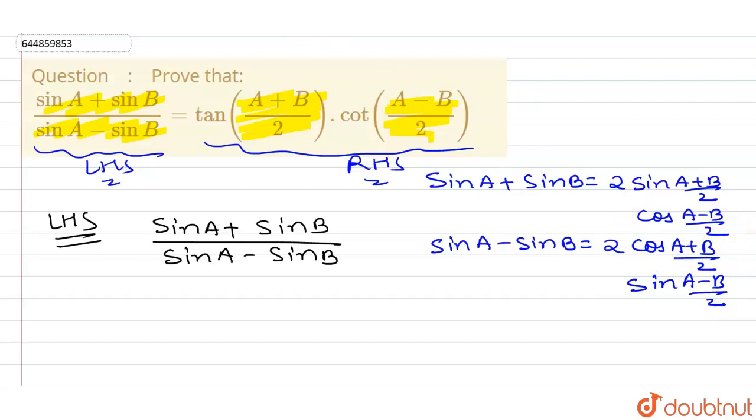I have to substitute these all the values in this given value. So sine A plus sine B is equals to this, so I can write here 2 sine A plus B by 2 cos A minus B by 2 upon sine A minus sine B.